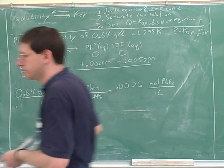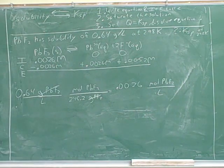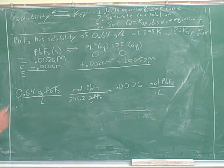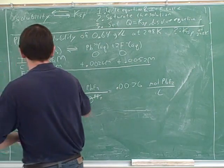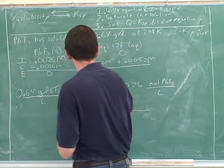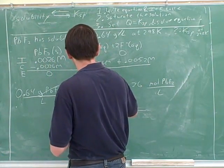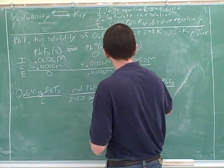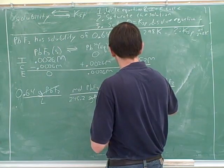This number should be twice this one because this coefficient is twice this one. Now we can do the end row — it's going to be 0.00 and it's easy. But of course, you can't do the end row unless you've got the initial row first.